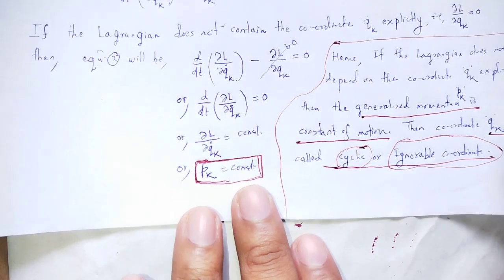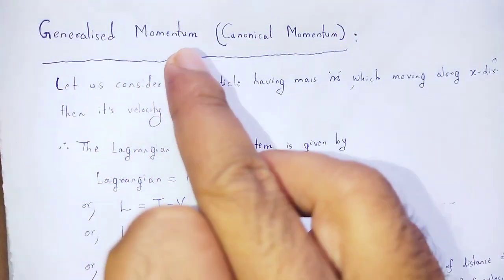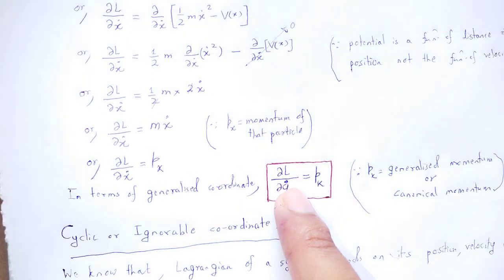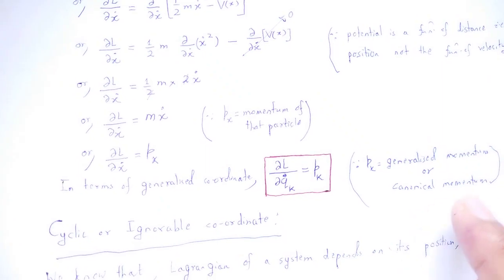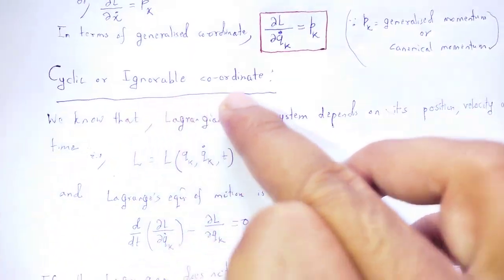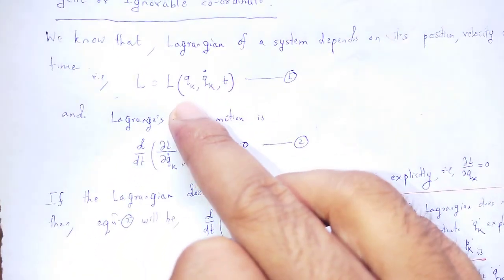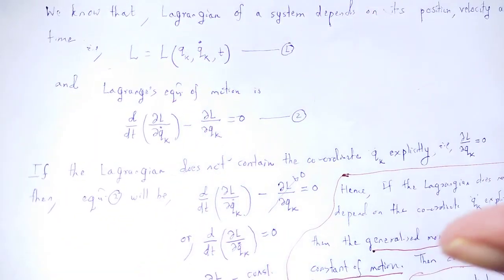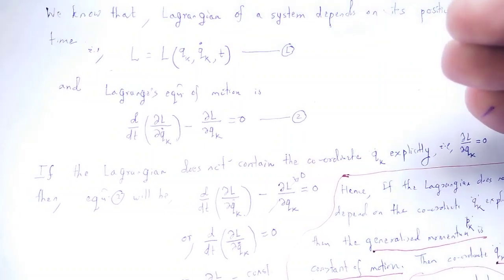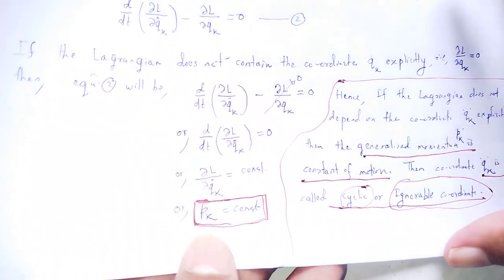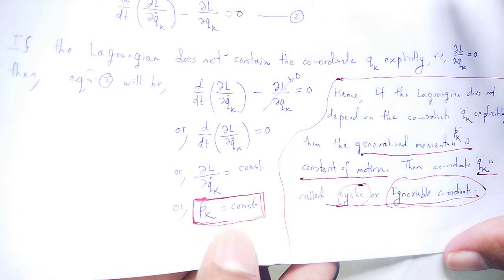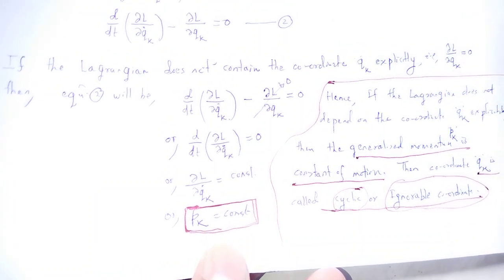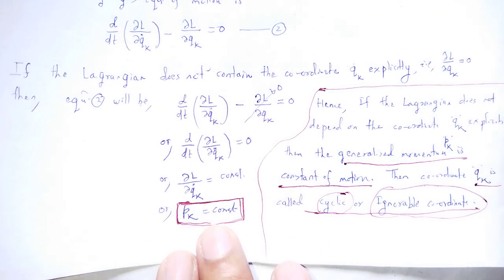In this video lecture we have discussed generalized momentum and canonical momentum, and cyclic or ignorable coordinates. We showed that when the Lagrangian does not depend on a coordinate q_k explicitly, the corresponding generalized momentum p_k is a constant of motion, and q_k is called a cyclic or ignorable coordinate. With these useful and informative notes, let me wind up the session. Thank you.